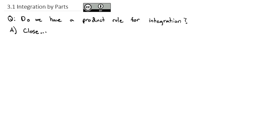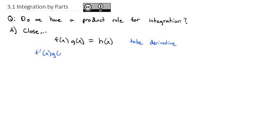The idea here is, if I have a product — let's say f of x times g of x — and we'll just say that's equal to our h of x. And if I were to take the derivative of both sides, we would get, using the product rule of derivatives, the derivative of the first times the second, plus the first times the derivative of the second, is equal to our derivative.